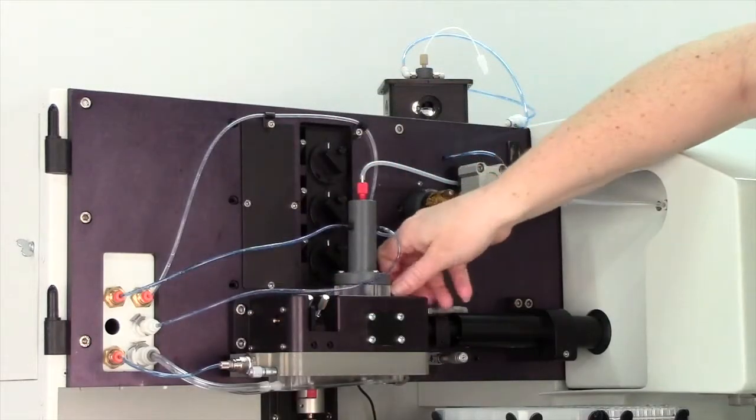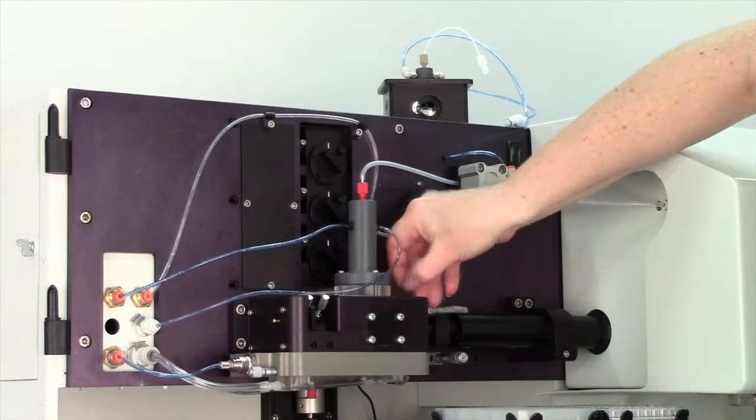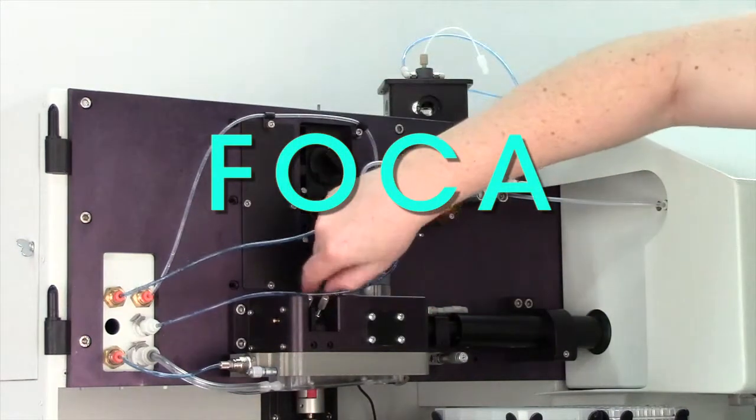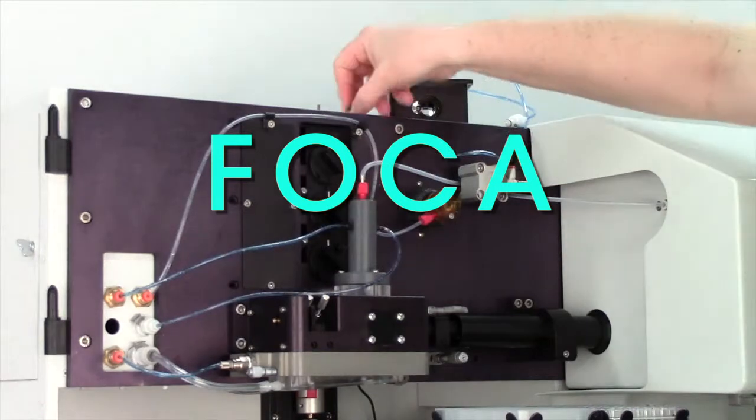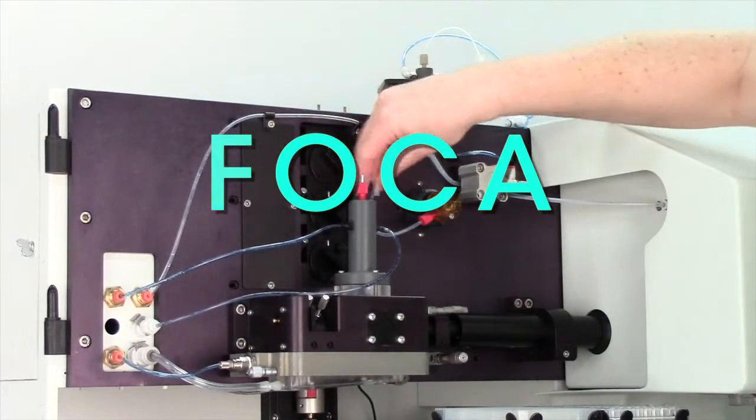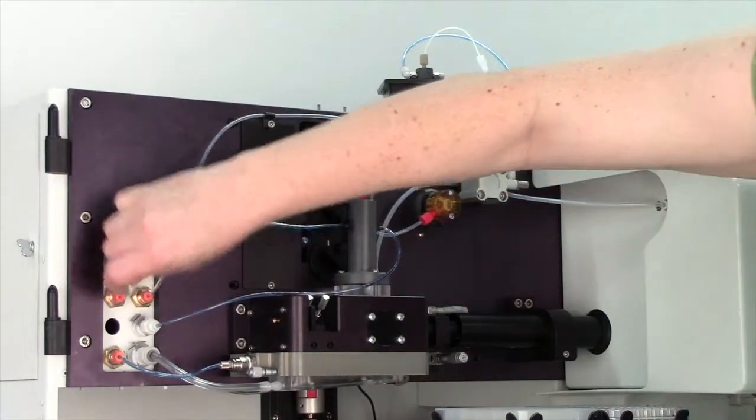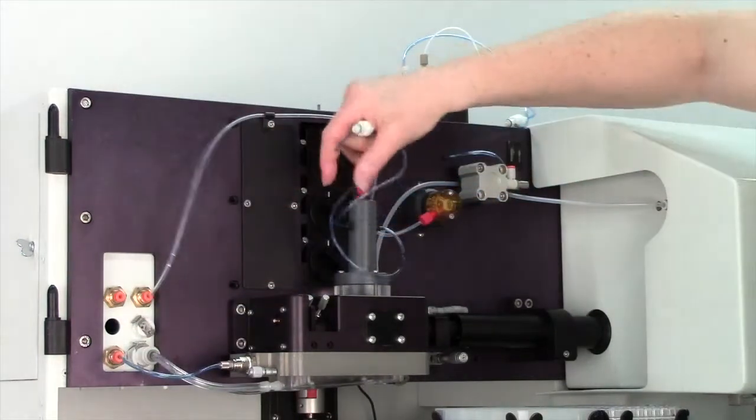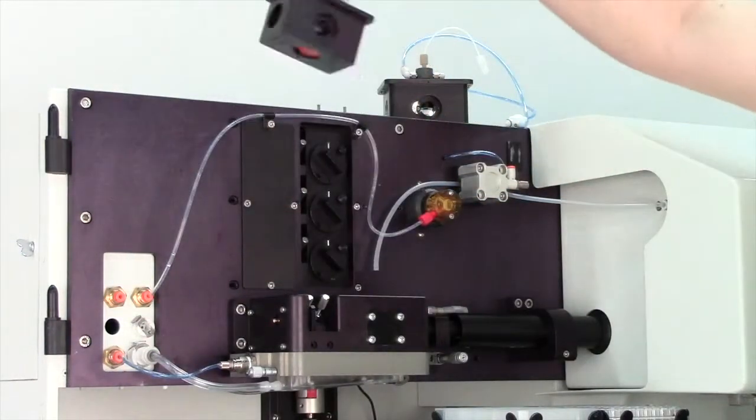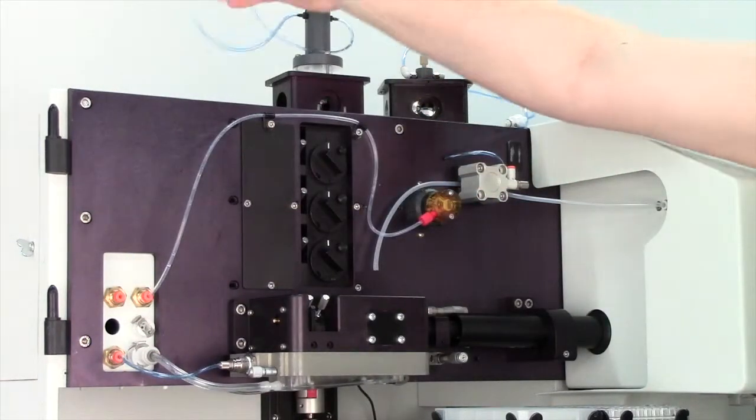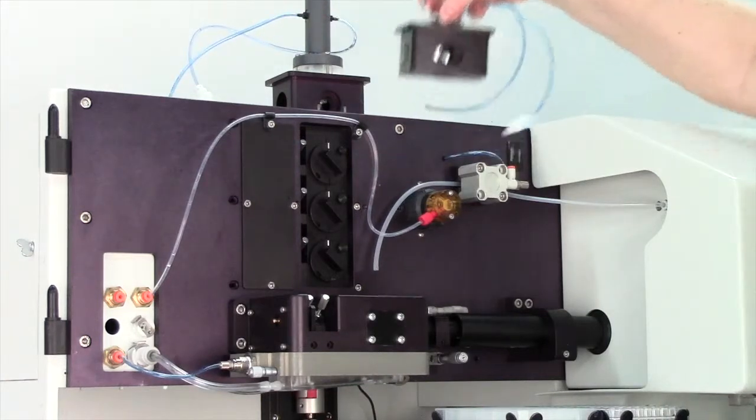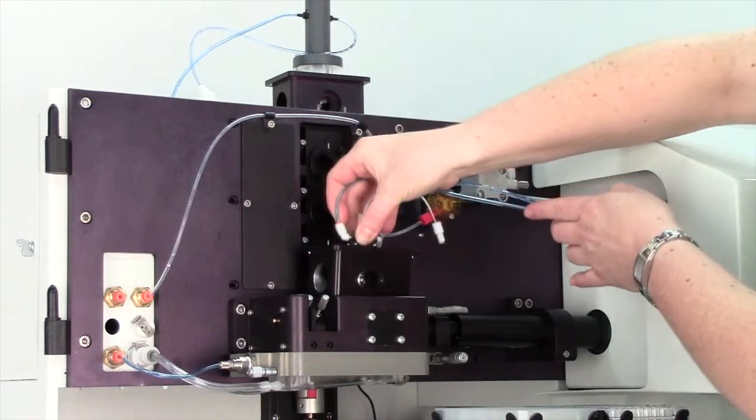A unique feature of biosorter is its interchangeable fluidic and optics core assemblies, or FOCA. This feature allows the biosorter to accommodate a wide range of sample sizes. Each FOCA contains both a flow cell and pre-aligned optics, which allows the operator to quickly change between samples of different size ranges.